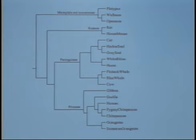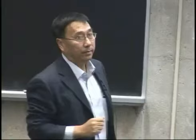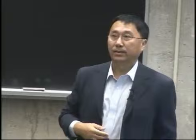The top branch is the marsupials. When they have babies, those babies don't have a placenta, so they are born small — or sometimes they lay eggs, like the platypus.